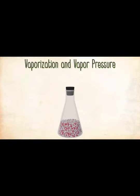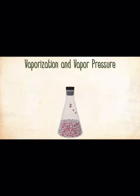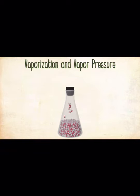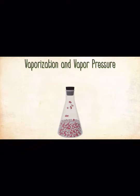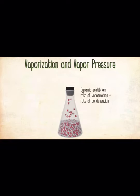In an open container, the water level drops over time because the molecules vaporize away. In a closed container, the water molecules vaporize as before, but since the container is closed, the newly vaporized molecules cannot escape — they build up in the gas state in the flask. Eventually those molecules begin to recondense. As the concentration of molecules in the gas state increases, the rate of condensation increases as well. Eventually the two rates become equal — dynamic equilibrium has been reached.